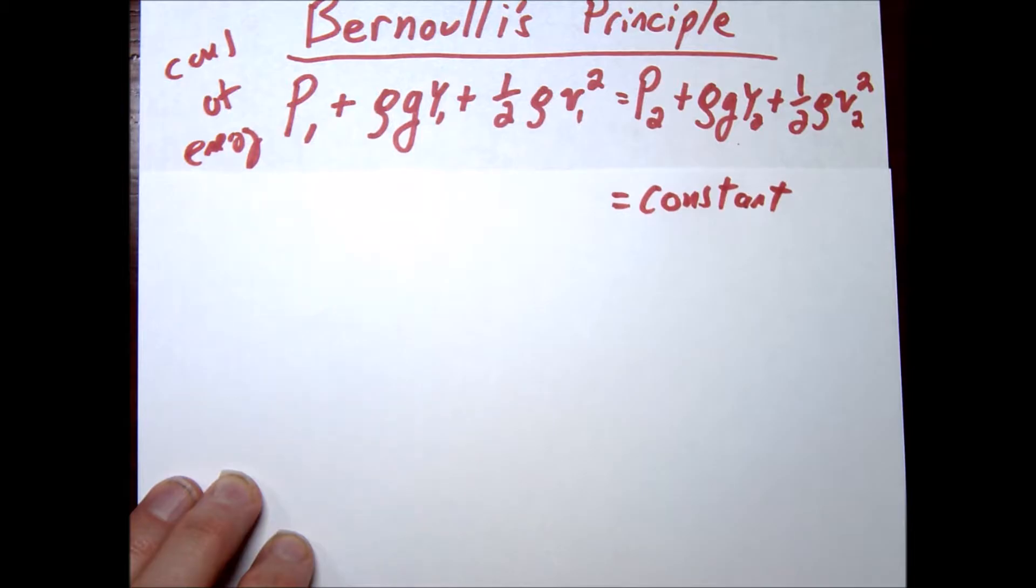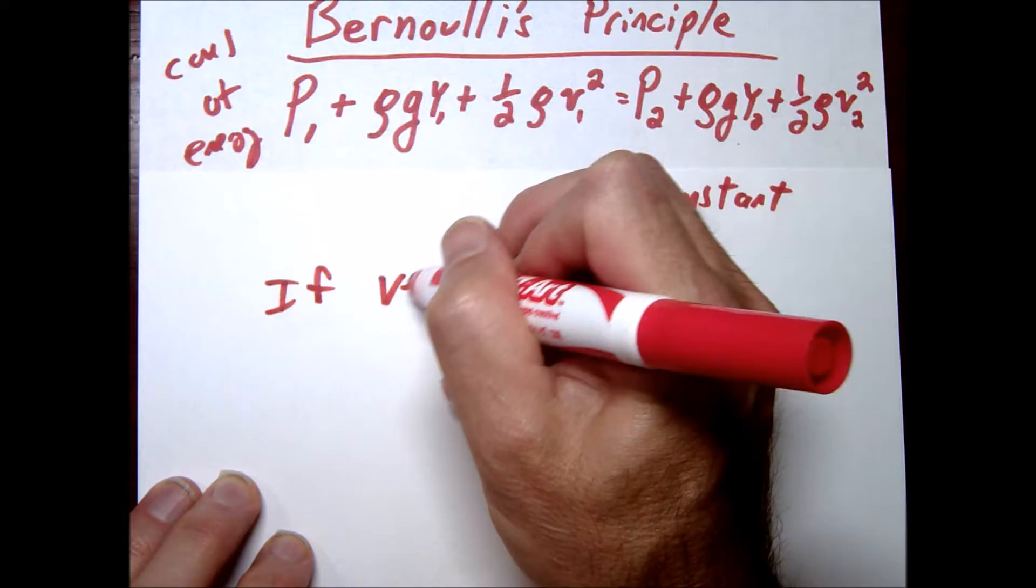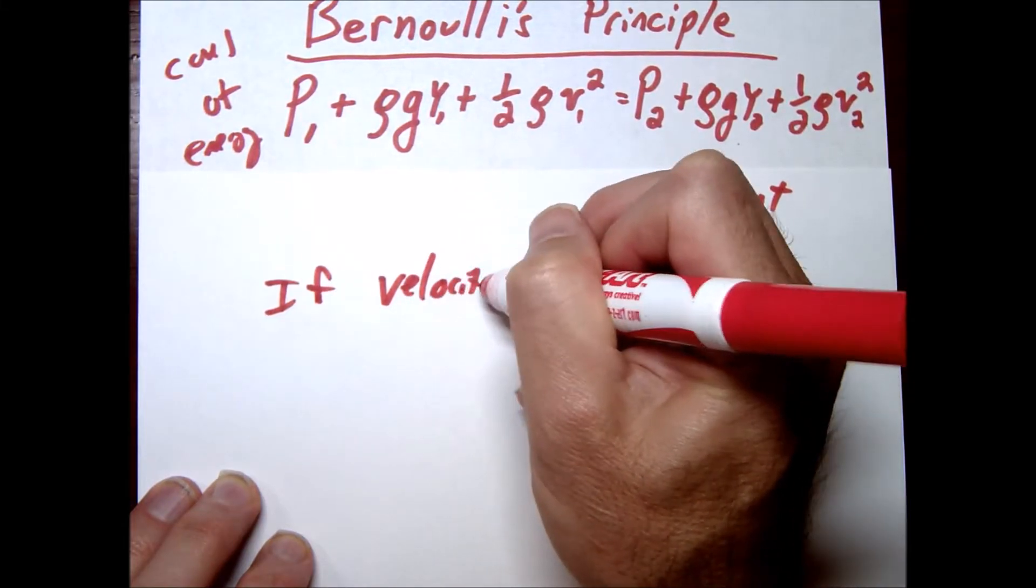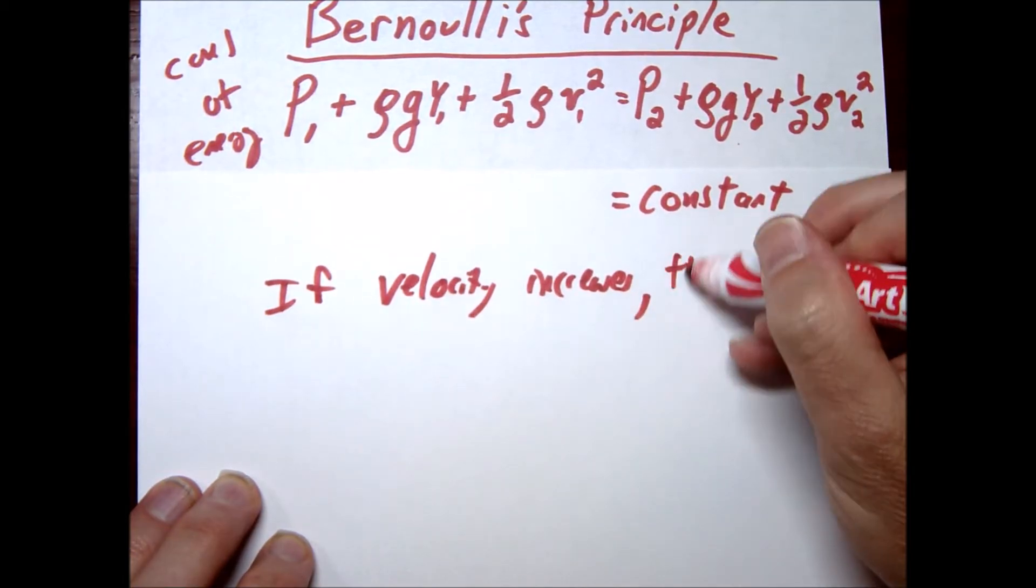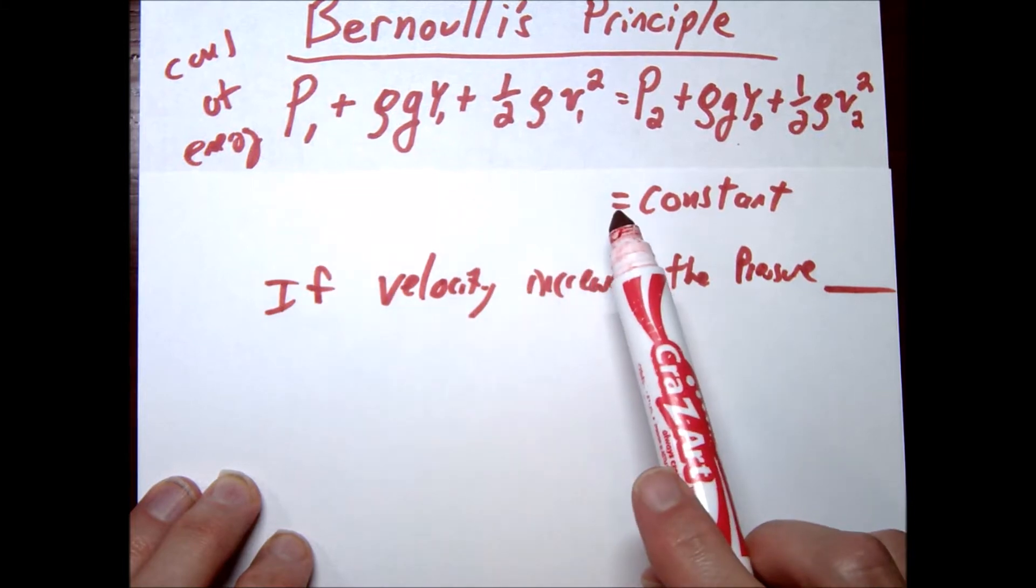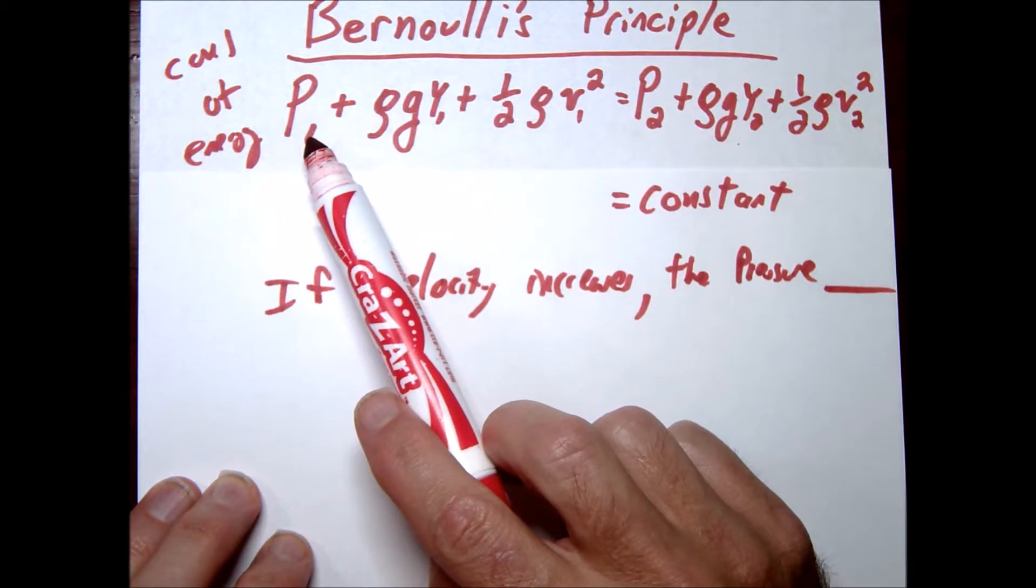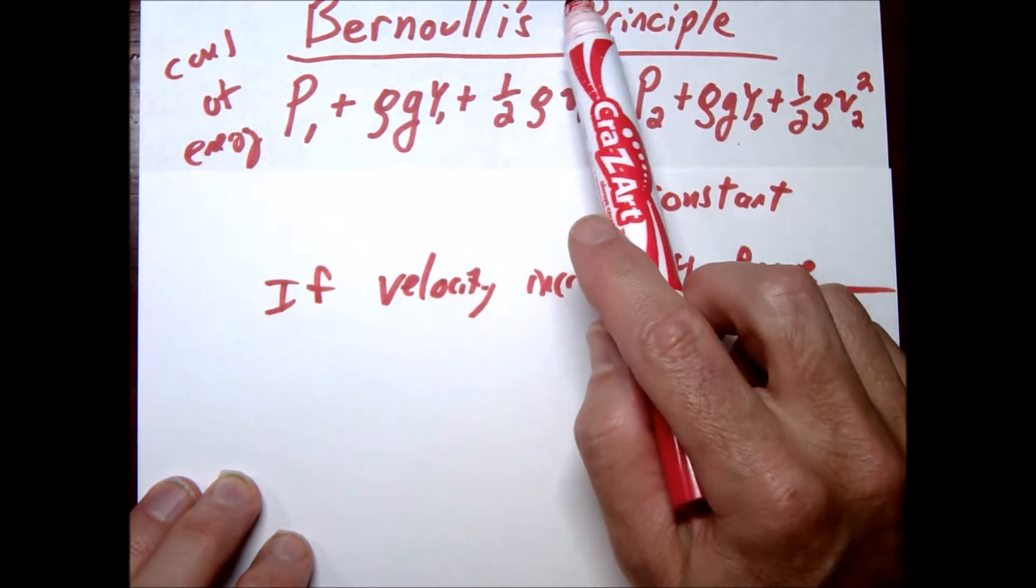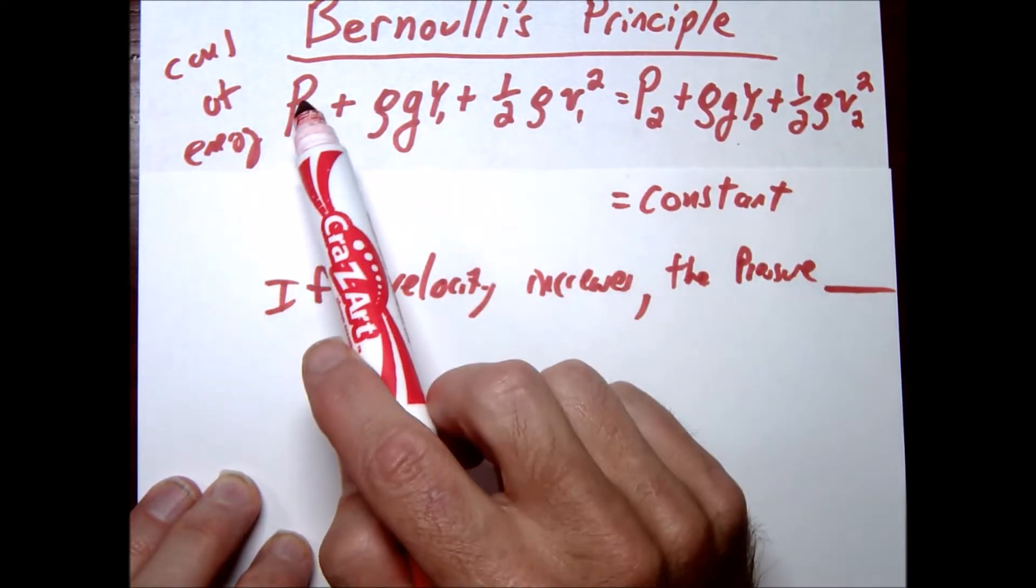So one of the big questions or concepts that's often asked is if velocity increases, what happens to the pressure? So if the velocity increases, what's going to happen to the pressure? Well mathematically hopefully you can see the answer is pretty clear. Let's assume the height is going to be the same here. If the velocity goes up, then in order to maintain this constant, our velocity goes up, our pressure is going to go down.